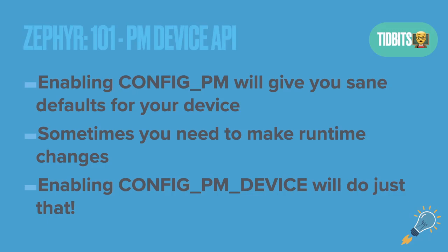If you just enable the plain old CONFIG_PM, the Power Management API, it'll give you some sane defaults, and as long as your device manufacturer has good support in their drivers, it should kind of do things on its own. But in some cases you need to make changes dynamically at runtime — maybe you want to use your interface for a certain amount of time, then shut it off when you're not using it. So the standard power savings setup isn't enough and we have to enable the configuration. CONFIG_PM_DEVICE enables your Power Management Device API so you can change things on the fly.